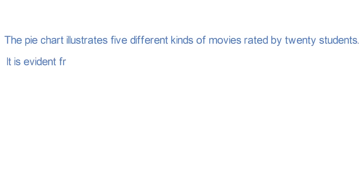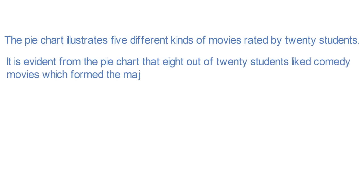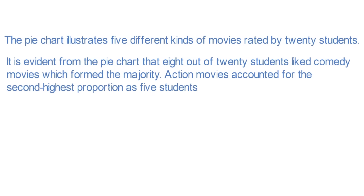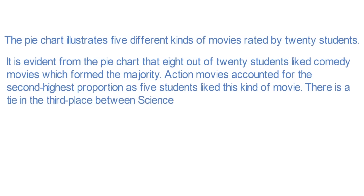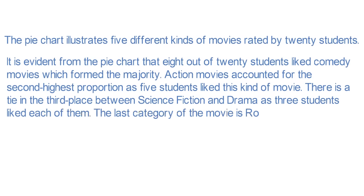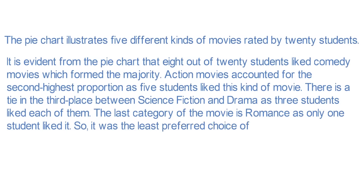It is evident from the pie chart that 8 out of 20 students liked comedy movies which formed the majority. Action movies accounted for the second highest proportion as 5 students liked this kind of movie. There is a tie in the third place between science fiction and drama as 3 students liked each of them. The last category of the movie is romance, only one student liked it. So, it was the least preferred choice of the students.